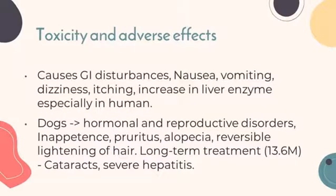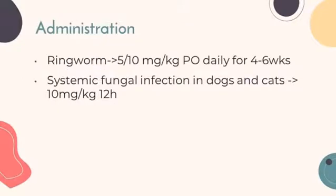Ketoconazole causes gastrointestinal disturbances including nausea, vomiting, dizziness, itching, and increase in liver enzymes, especially in humans. It could also cause hormonal and reproductive disorders, inappetence, pruritus, alopecia, reversible lightening of hair, and severe hepatitis in dogs. For ringworm treatment, 5 to 10 mg/kg given orally daily for 4 to 6 weeks. For the treatment of systemic fungal infections in dogs and cats, 10 mg/kg every 12 hours is given.